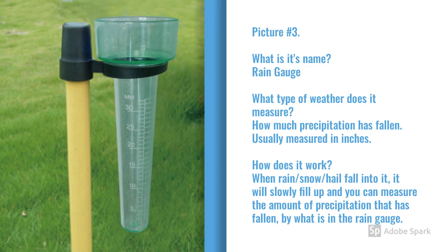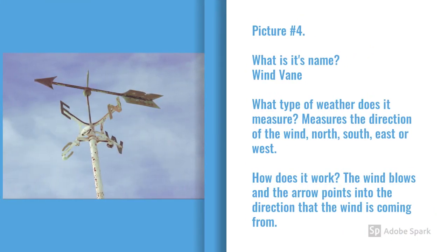Picture number three is called a rain gauge. It measures how much precipitation has fallen, usually measured in inches. It works by having precipitation fall into it, and as it fills up you can measure the amount that has fallen.